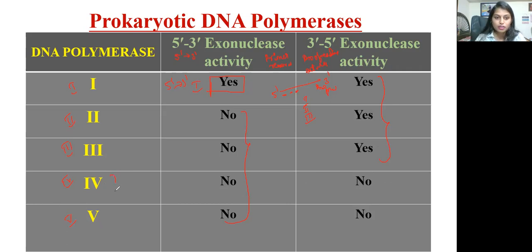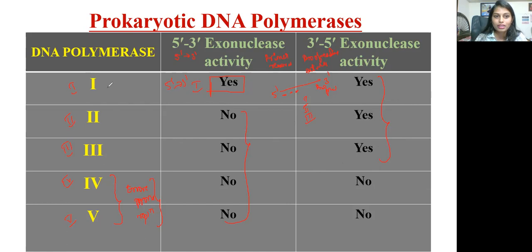DNA polymerase four and five are not involved in proofreading activity, so we call the replication performed in the presence of DNA polymerase four and five error-prone replication. This type of replication is called error-prone replication because there is no proofreading activity. DNA polymerase one also has both five prime to three prime exonuclease activity as well as three prime to five prime exonuclease activity, meaning it performs both primer removal and proofreading activity.